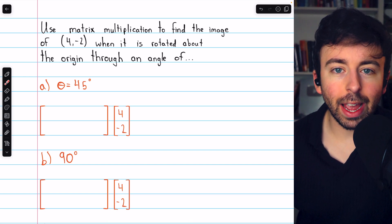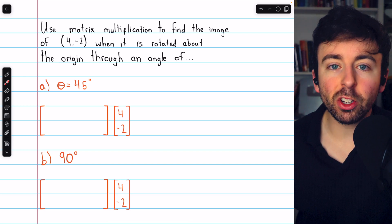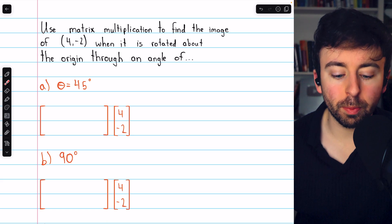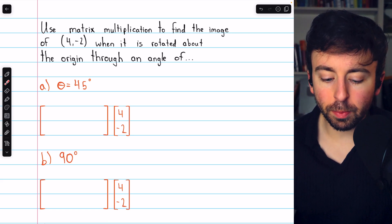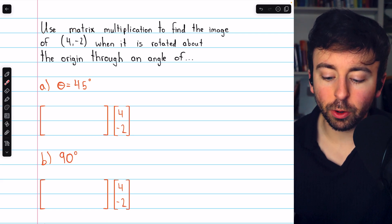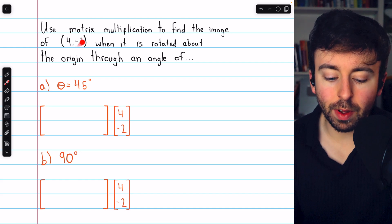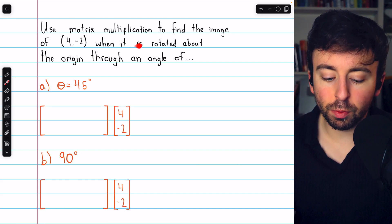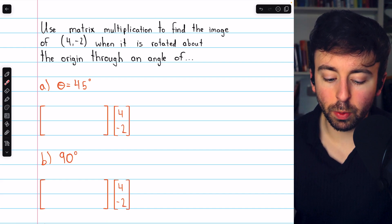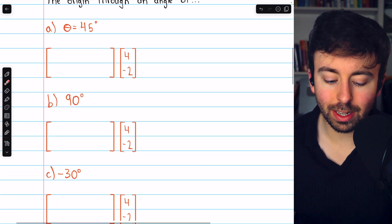We previously introduced rotations in the plane as a matrix operation, link in the description to that lesson. Today we'll get some practice using matrix multiplication to find the image of this vector in R² when it's rotated about the origin through an angle of 45 degrees.